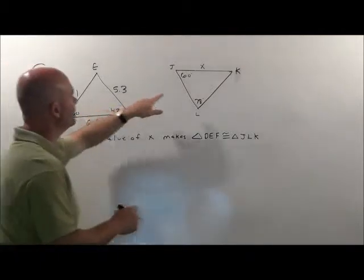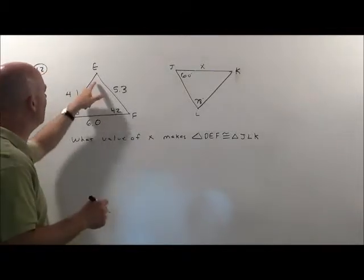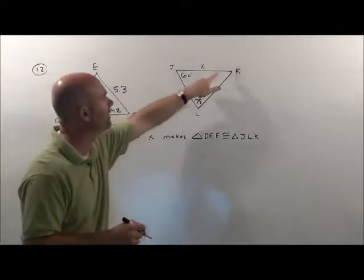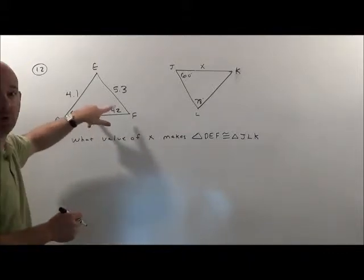One, they gave me 60 and 42 and they gave me 60 and 78. Let me go ahead and figure out what this other angle up here must be and what the angle up there must be. This is 60 and 42. That adds up to 102.